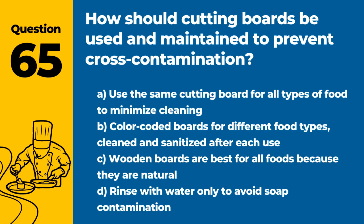Question 65. How should cutting boards be used and maintained to prevent cross-contamination? Answer: B. Color-coded boards for different food types, cleaned and sanitized after each use. This system helps prevent cross-contamination by keeping foods separate.